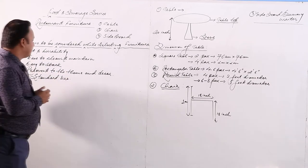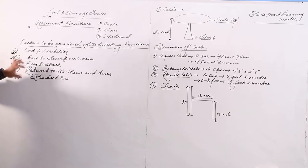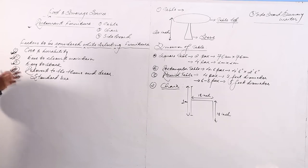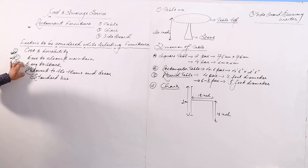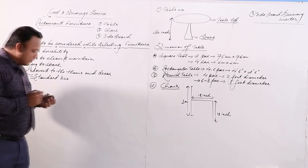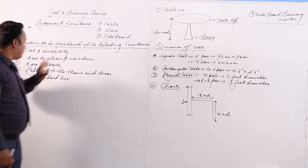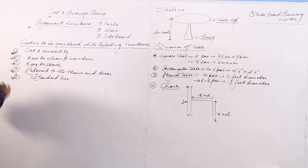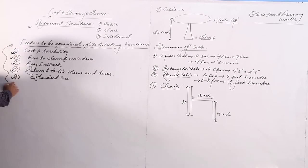The furniture should be relevant to the theme and decor of the restaurant. This is one of the most important factors. What is the theme of the restaurant? How is the decoration? The furniture should match the interior decoration because it reflects quality, and furniture that doesn't match the theme is a waste of money. Additionally, the restaurant furniture should be of a standard size, because standard size furniture reflects the quality and standard of the restaurant.